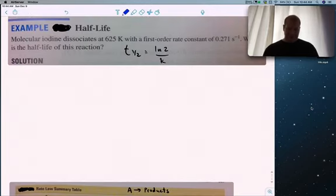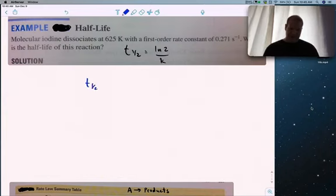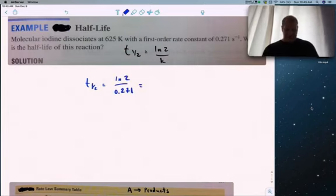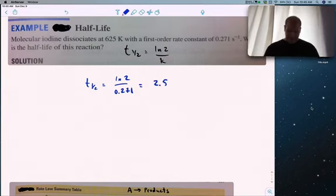Milk iodine dissociates with first order rate constant 0.271. What is the half-life? It's straightforward. Half-life is natural log of 2 over 0.271. Natural log of 2 divided by 0.271 gives 2.56 seconds with three sig figs.